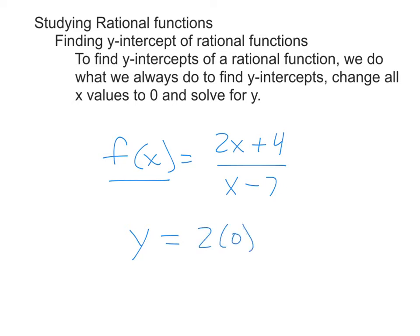You get 2 times 0 plus 4 over 0 minus 7. So that is 2 times 0 is 0 plus 4 over negative 7. So that is 4 over negative 7. And that is the y. So of the ordered pair, we let x be zero, and we got an answer for y that is negative four sevenths.